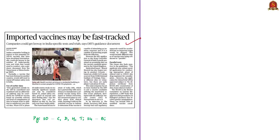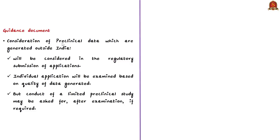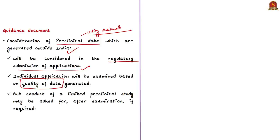Moving on to the next discussion: a recent guidance document released by the Department of Biotechnology, based on recommendations of the Review Committee on Genetic Manipulation (RCGM) and the Central Drugs Standard Control Organization (CDSCO). This document deals with applications for development of vaccines, diagnostics and therapeutics under a rapid response regulatory framework for COVID-19. The document first talks about preclinical data generated outside India. Preclinical data means research using animals to find out if a drug or treatment is likely to be useful, taking place before any testing in humans. Such data will be considered in regulatory submissions, and individual applications will be examined based on quality of data generated.